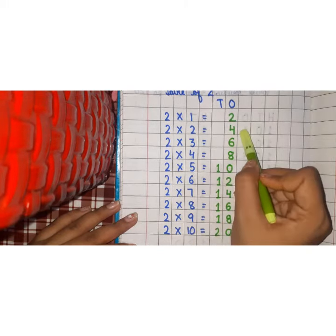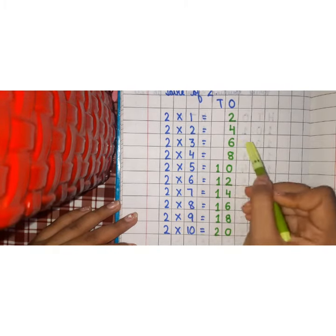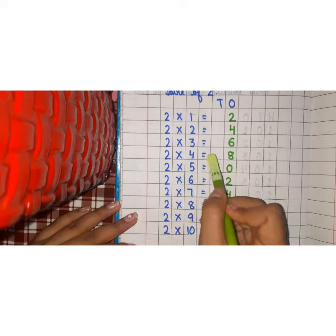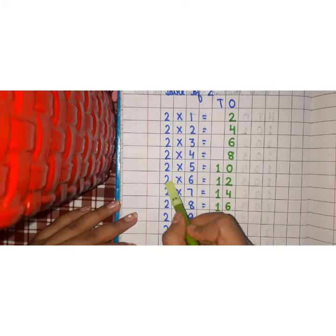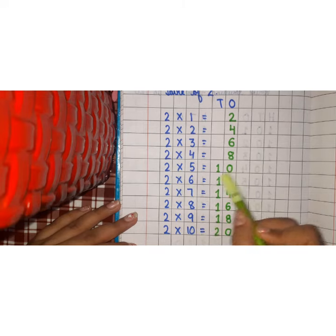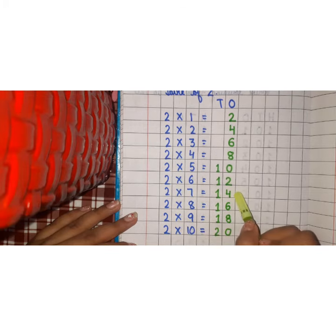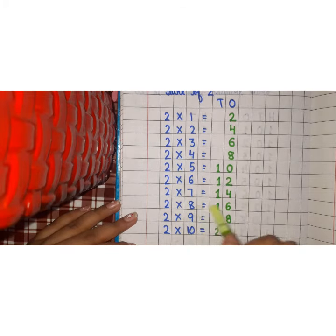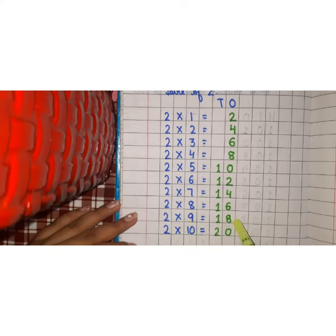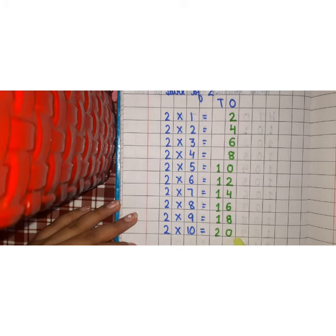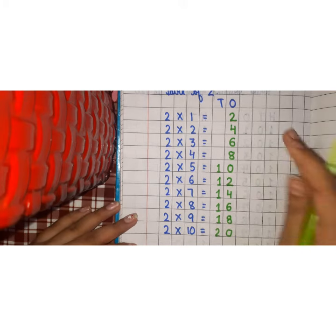2 ones are 2. 2 twos are 4. 2 threes are 6. 2 fours are 8. 2 fives are 10. 2 sixes are 12. 2 sevens are 14. 2 eights are 16. 2 nines are 18. 2 tens are 20. This is the table of 2.